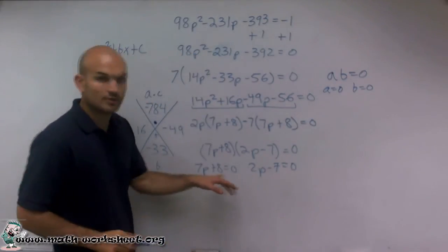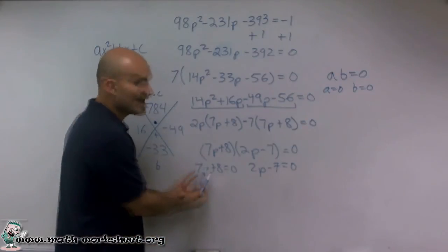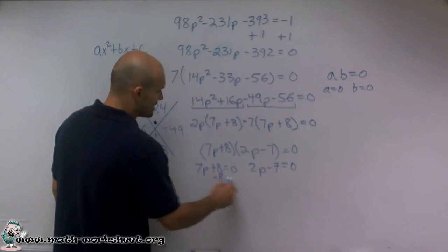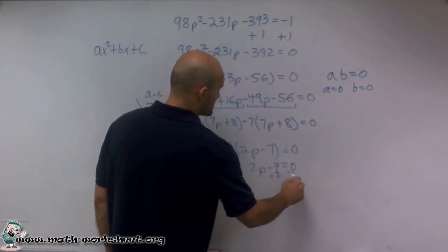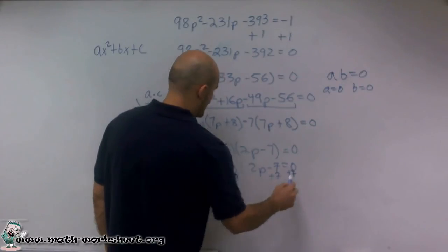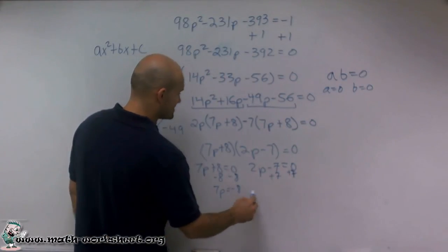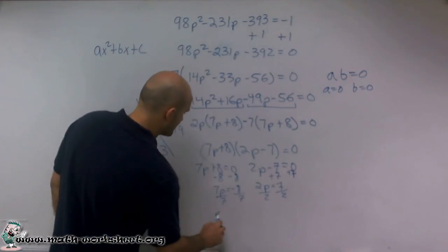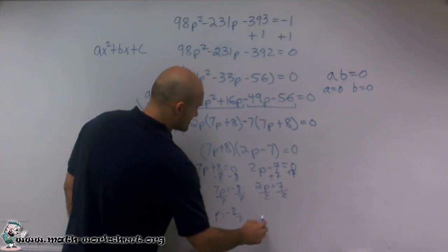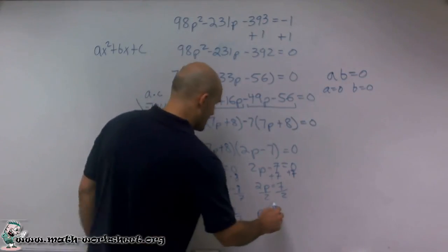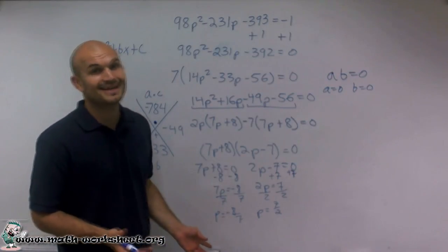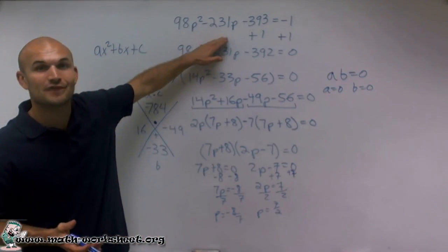So now what I'm going to do is now I have two-step equations, where now I have only one variable, which I can use my inverse operations to solve. So I do that. I subtract an 8 on both sides, add a 7 on both sides. Then I'm left with 7p equals negative 8, 2p equals positive 7. Divide by 7, divide by 2, and here I get p equals negative 8/7, and here I get p equals positive 7/2. And there you go, ladies and gentlemen. That is your solution to this lovely polynomial. Thanks.